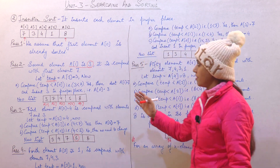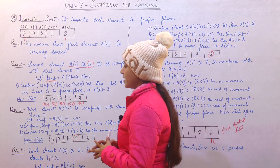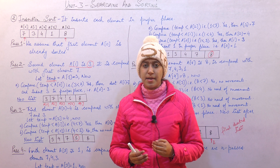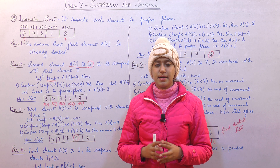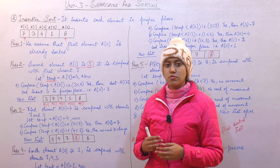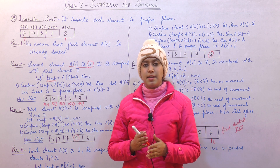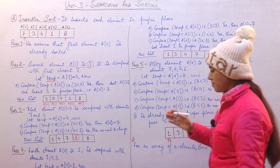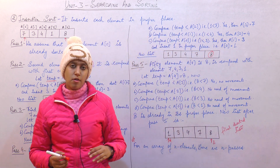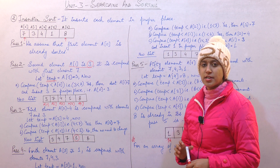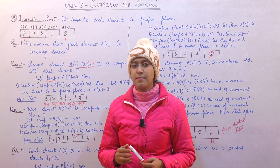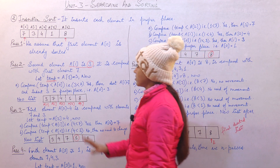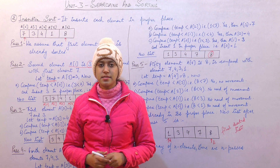This is one of the most important conditions of insertion sort. To summarize: we first assume the first element is already sorted. In pass 2, we take the second element and compare with the first; if greater, we interchange. In pass 3, we compare with elements at locations 0 and 1, and so on. Elements less than the temporary variable interchange their positions until we get the final sorted list. I hope you have understood how to apply insertion sort. Thank you very much.